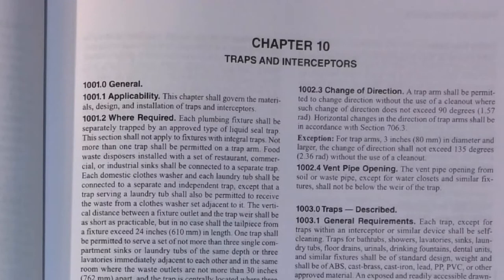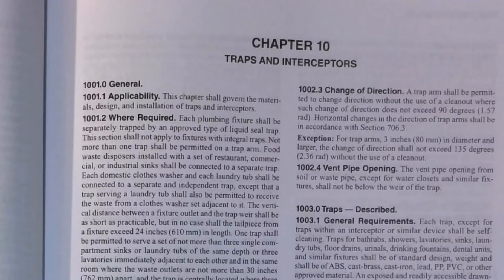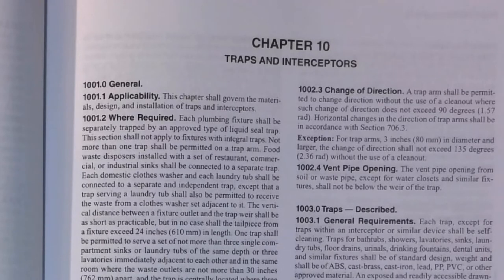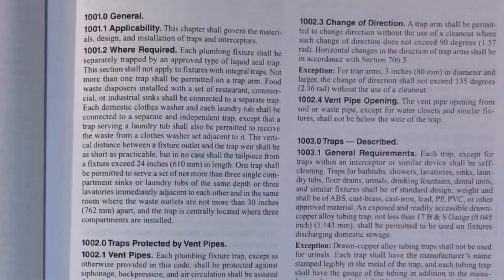Welcome to Chapter 10, Traps and Interceptors of the Uniform Plumbing Code, 2018 edition. We previously went over Chapters 8 and 9, which covered indirect waste and vent piping. This is going to be the last chapter in that section for your upcoming test. So let's go ahead and get right into it — starting with where traps are required.